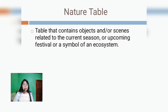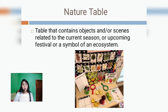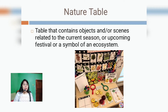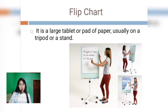The next example is the nature table. It is a table that contains objects or scenes related to the current season, upcoming festivals, or a symbol of an ecosystem. Children love to follow the natural changes that the world offers, and each month classroom decorations reflect this — for example, when Christmas is coming, all the tables are full of Christmas scenes.